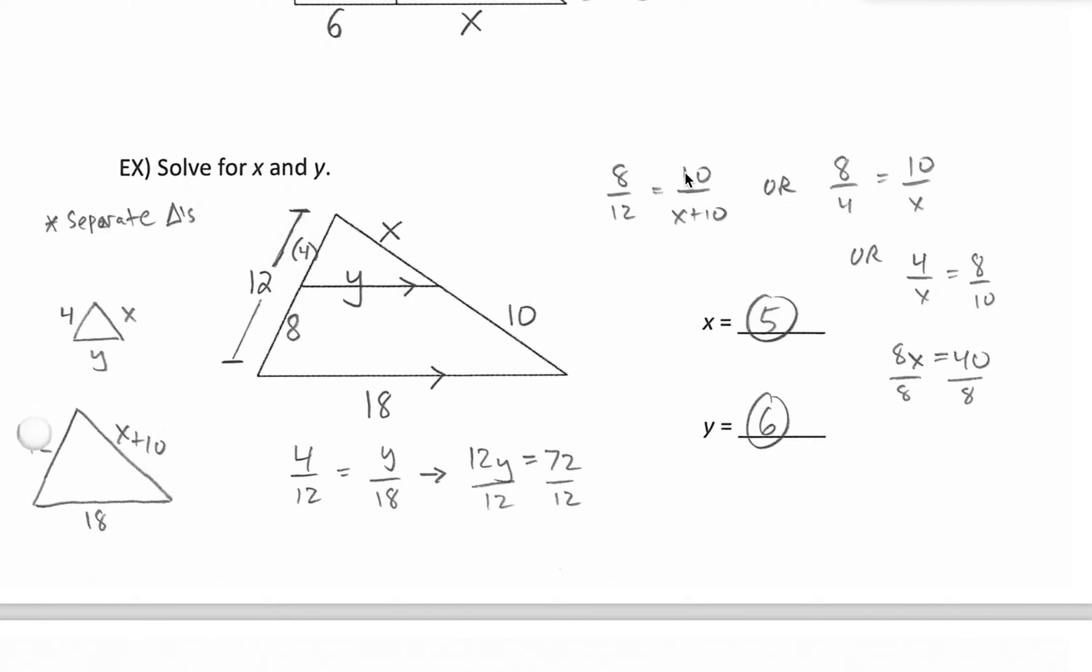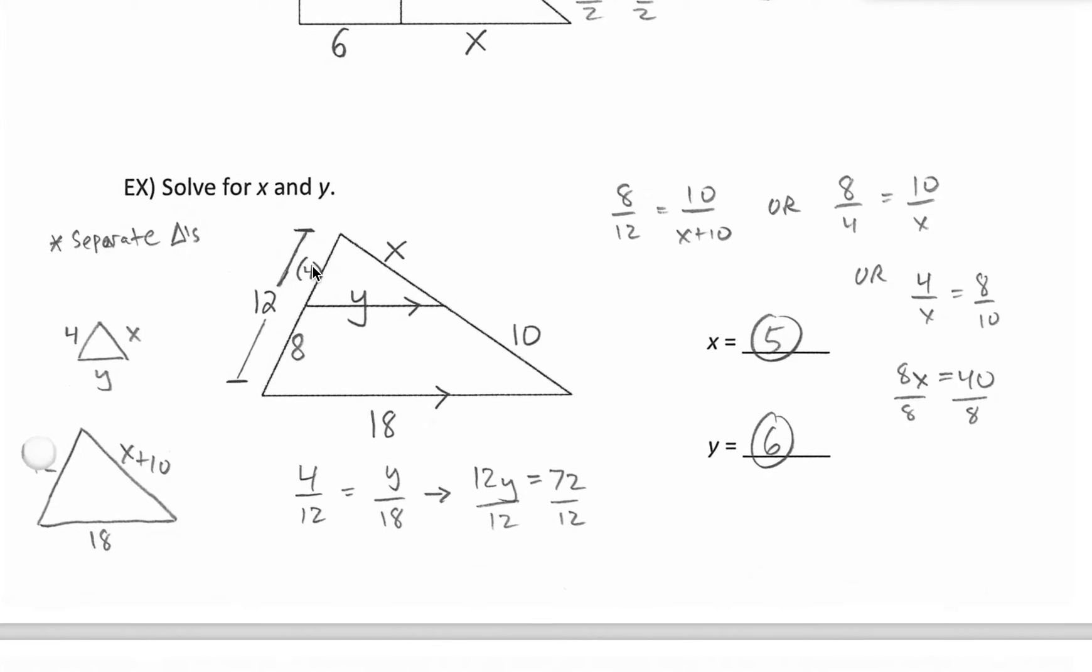It seems that I made a little mistake right there. Another way that we could do it is rather than separate it to solve for x, I could do what we did up here. Just compare parts to parts. So left side to right side on the top, 4 to x, and bottoms 8 to 10. Or bottom to top on the left side, 8 to 4. Bottom to top on the right side, 10 to x.